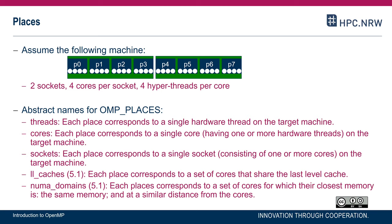If OMP_PLACES=sockets, a thread can roam freely within the cores and hyperthreads of a socket. If set to cores, the thread can only roam within a single core over its four hyperthreads. OpenMP version 5.1, to be released in November 2020, will introduce the abstract names LL_caches — places containing all cores sharing the same last-level cache — and NUMA_domains, representing all cores grouped together forming a NUMA domain with the same bandwidth and latency to a given physical memory location.